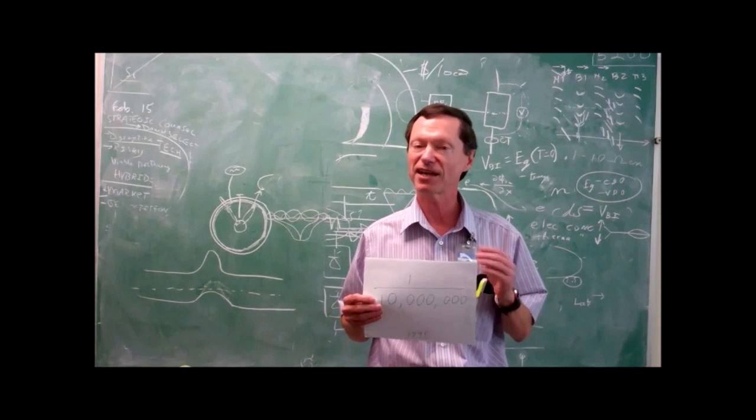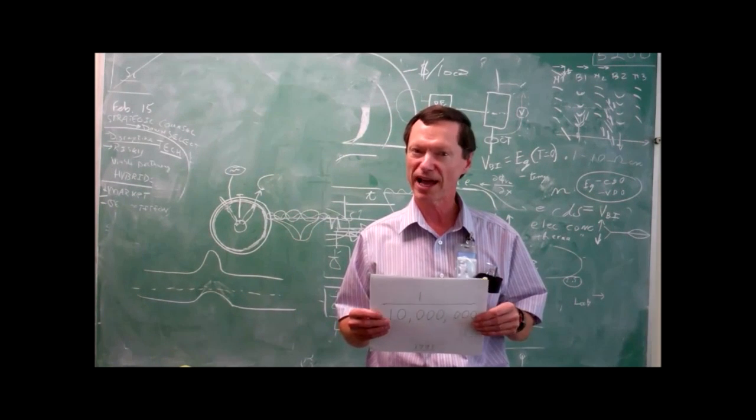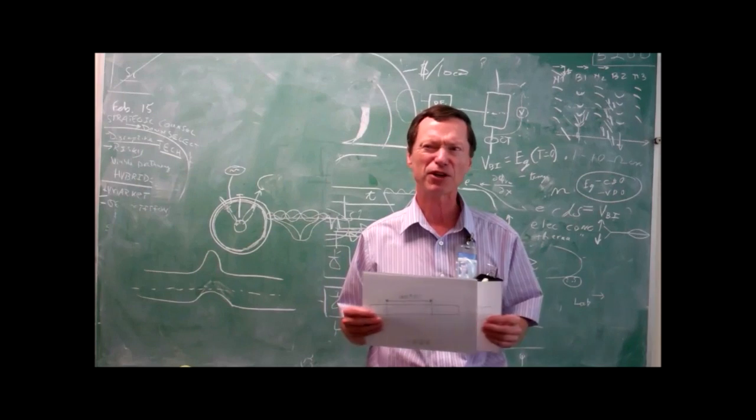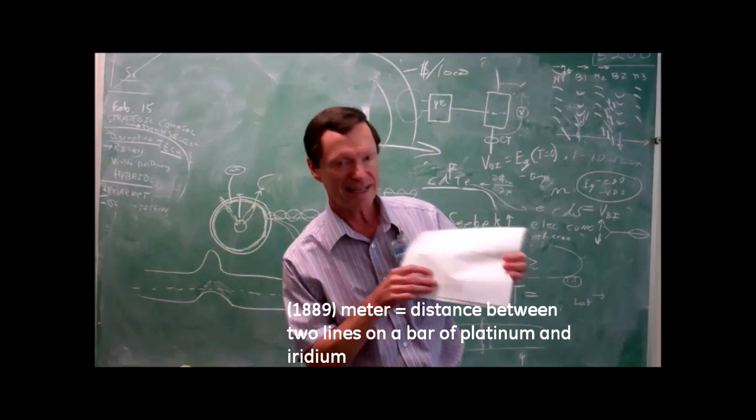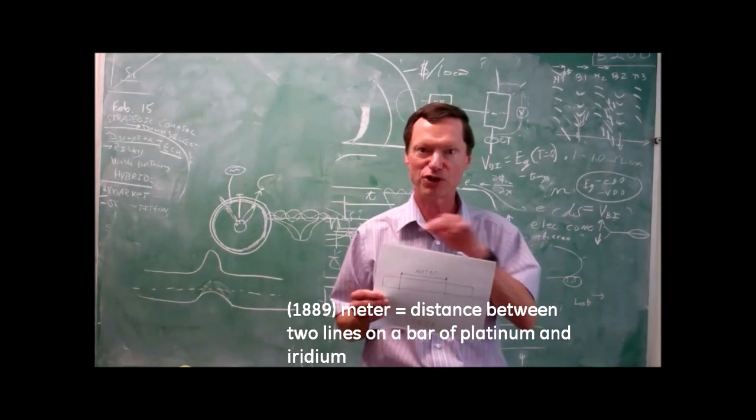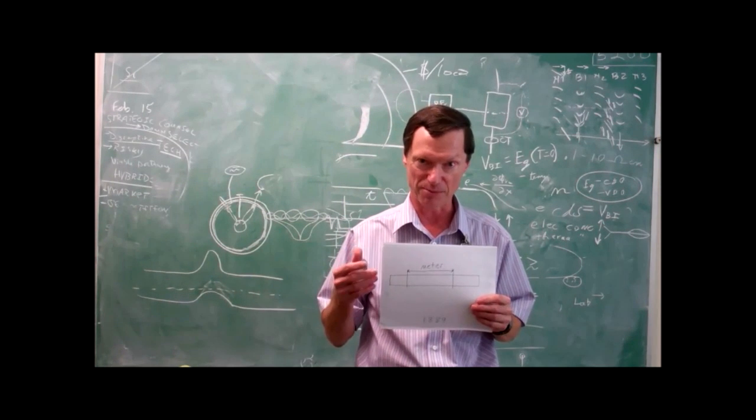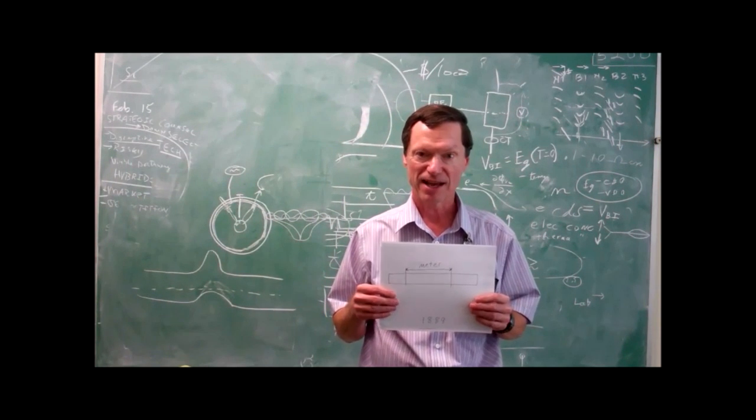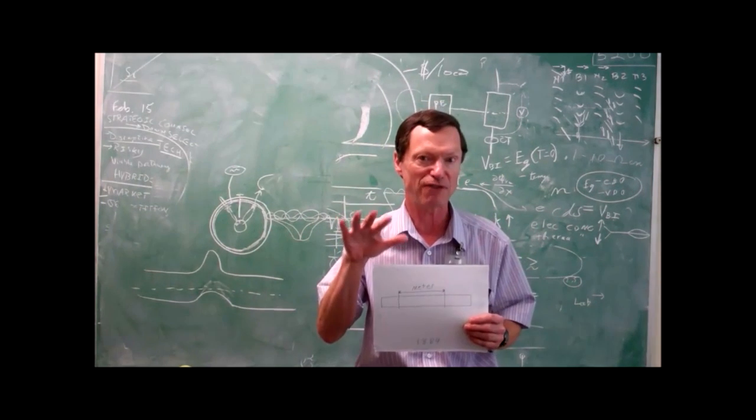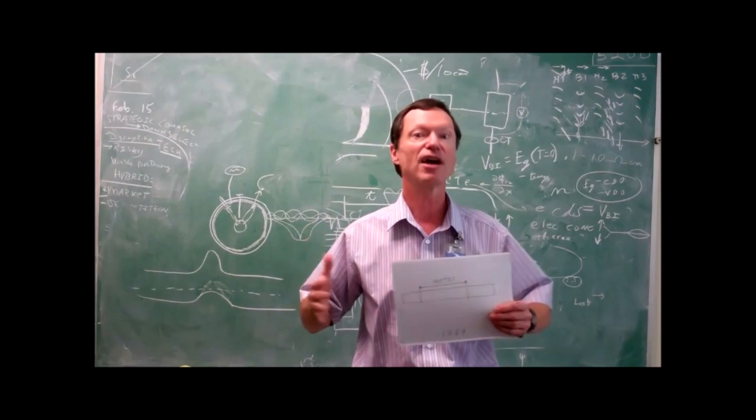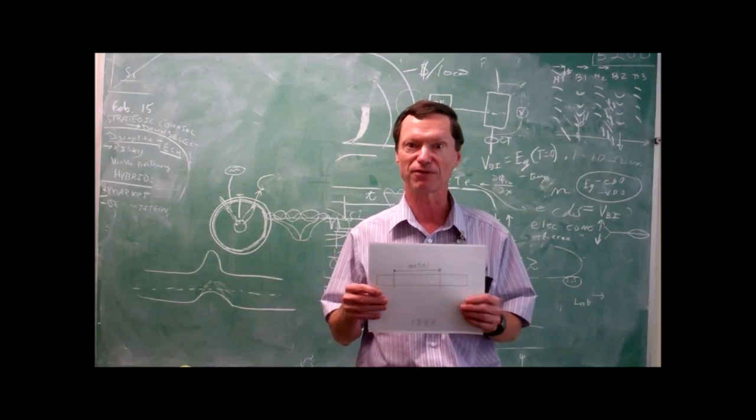Now it turned out, however, that that definition was a little tough to measure. And it wasn't real accurate because the earth is not really a completely round ball. So in 1889, they changed the definition to the distance between two lines on a bar of platinum and iridium, which they kept in a safe place. Now they made the distance between those two lines as close as they could to the previous definition because they didn't want to change their definition of length because everyone was using that measurement to measure the length of things.